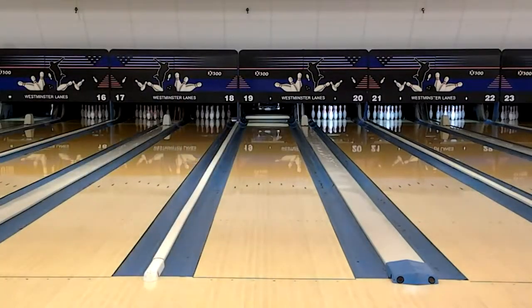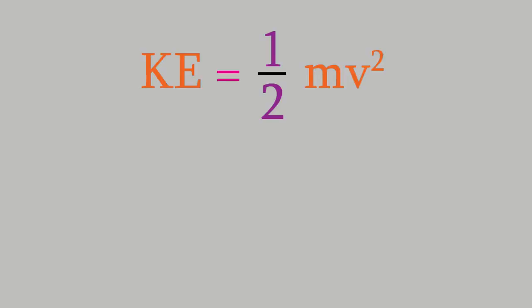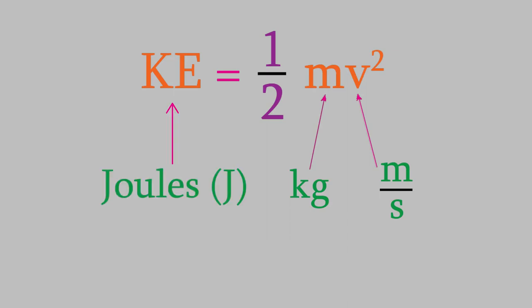We can give the kinetic energy a number using this equation. The kinetic energy is one-half the mass times the velocity squared. We measure the mass in kilograms and the velocity in meters per second, and that gives us an energy in units called joules, which we symbolize using the letter J. So this tells us the kinetic energy that an object has as a result of the fact that it's moving.